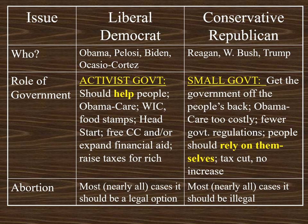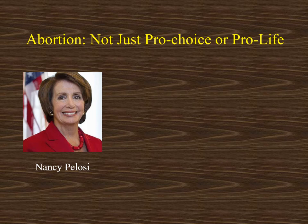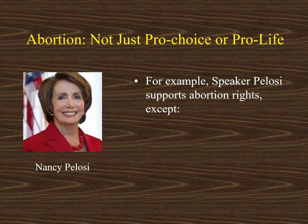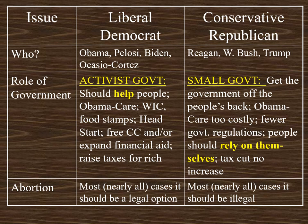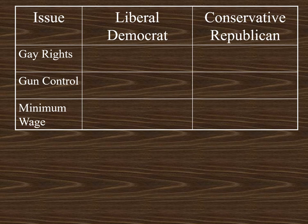A liberal Democrat would take a different approach and argue that in most — just about all — cases, abortion should be a legal option. We need to move beyond a simple pro-choice versus pro-life description. Nancy Pelosi's position gives a good example: she has a strong record of support for abortion rights, but they would not be absolute. Nancy Pelosi would not support a late-term abortion — for instance, in the eighth month if a woman simply decided she no longer wanted the baby and was otherwise healthy. That is not legal anywhere in the United States under those circumstances.